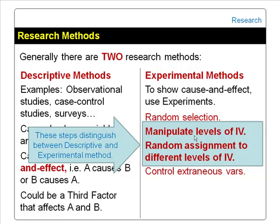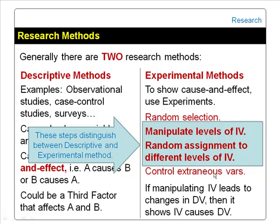Random assignment and controlling the extraneous variables address the issue of internal validity — that is, ensuring the differences observed in the dependent variable are really caused by manipulating the independent variables.